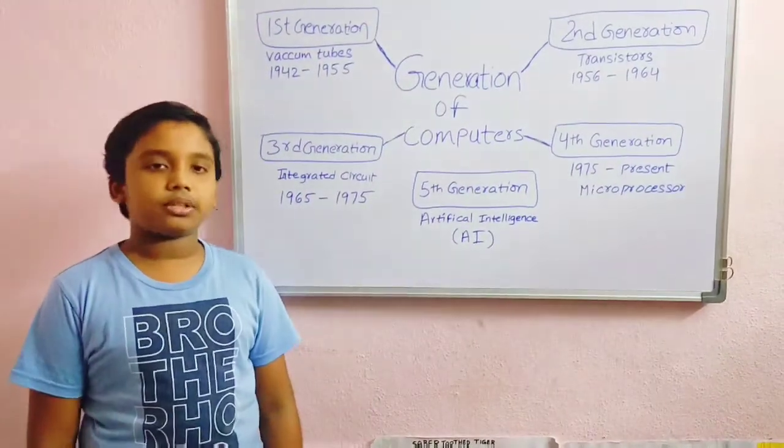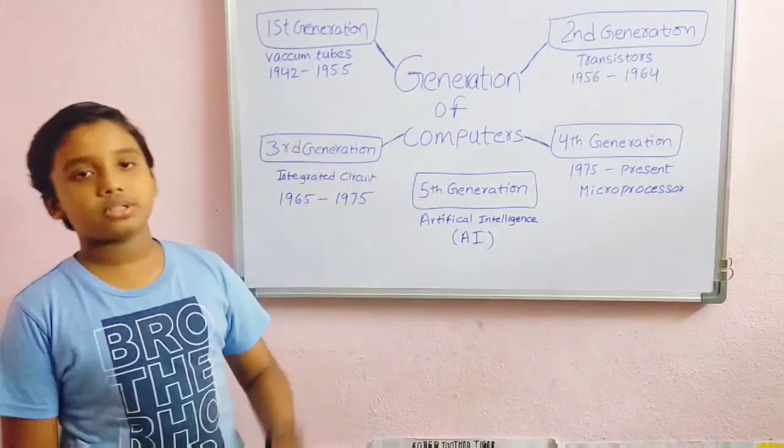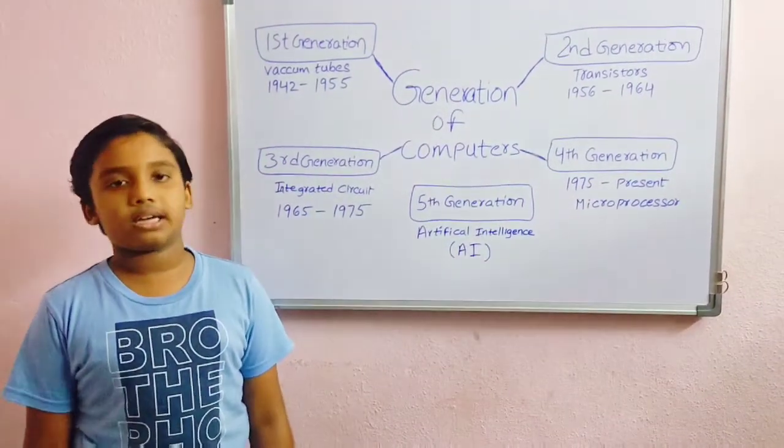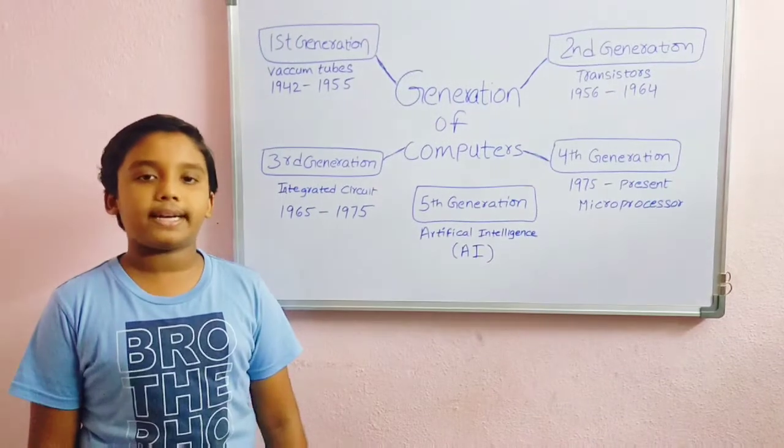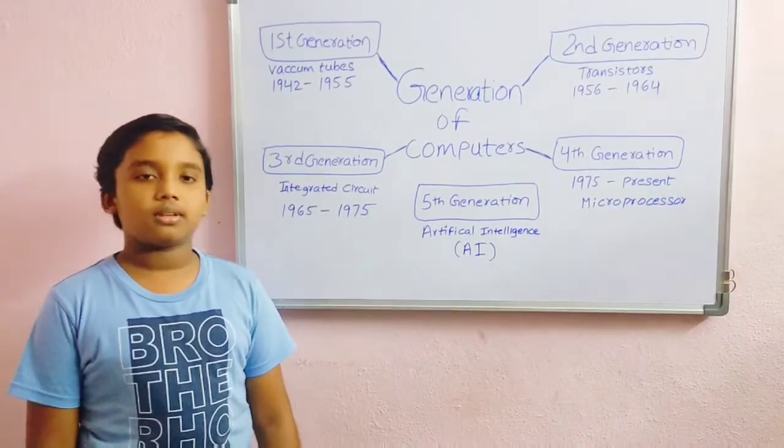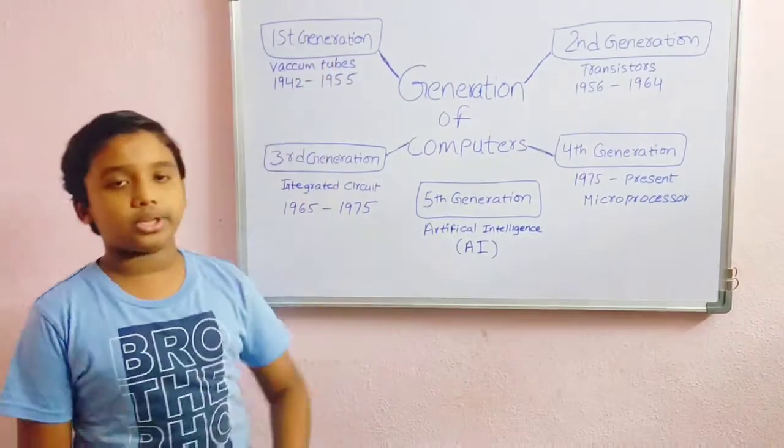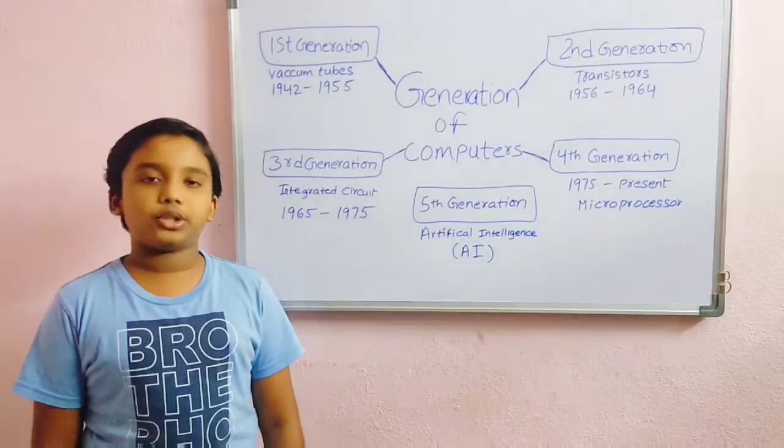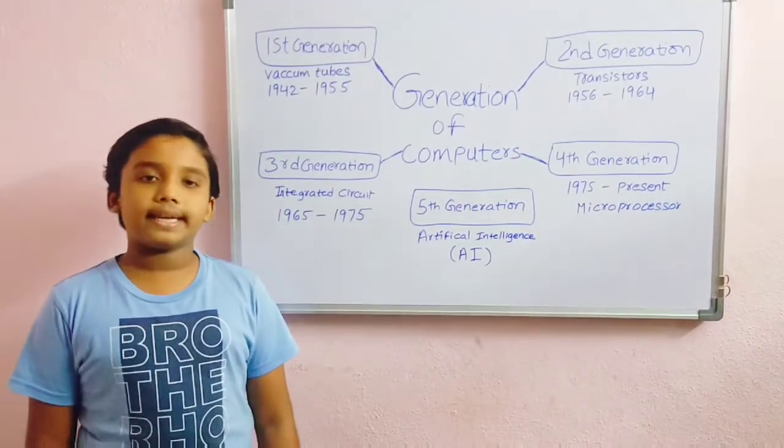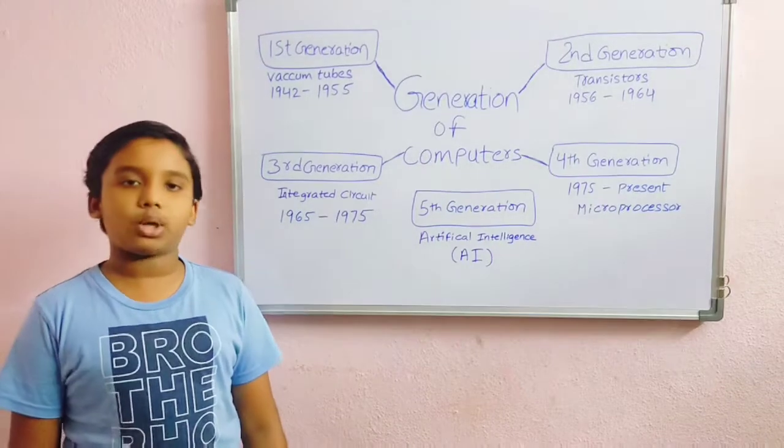The first generation computers used vacuum tubes. A vacuum tube consists of a glass bulb and a wire. The wire is used to carry data in the form of electronic signals. The first generation computers were large, expensive, and used a big amount of electricity. The ENIAC was a first generation computer.